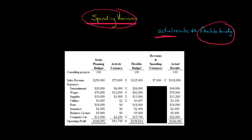Let's start with entertainment expense. The actual amount was $49,000, but according to the flexible budget it should have been $26,000. So we have a $23,000 unfavorable spending variance — we incurred $23,000 more in entertainment expenses than what the flexible budget said we should have. That's something we should look into.